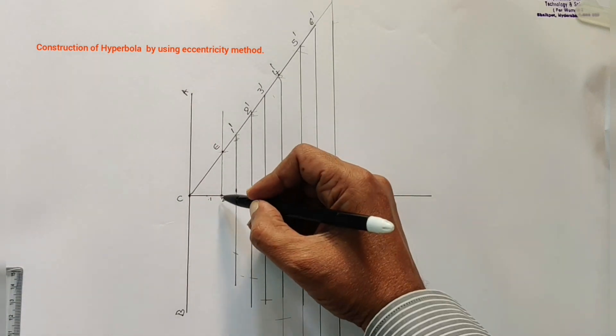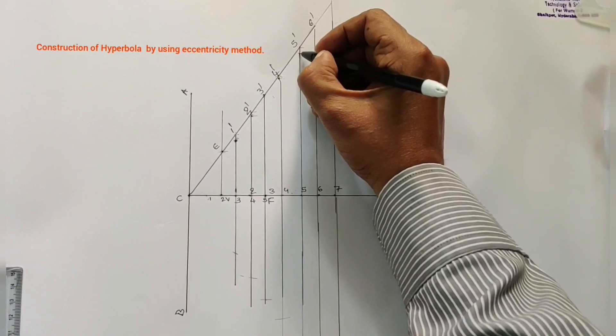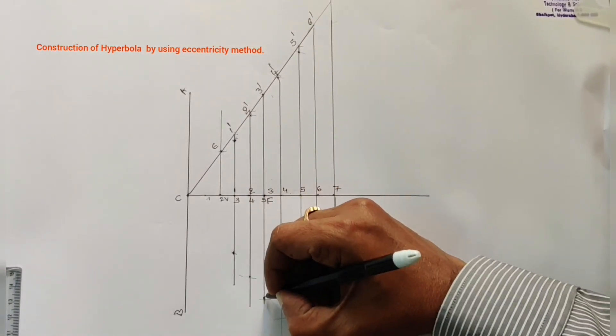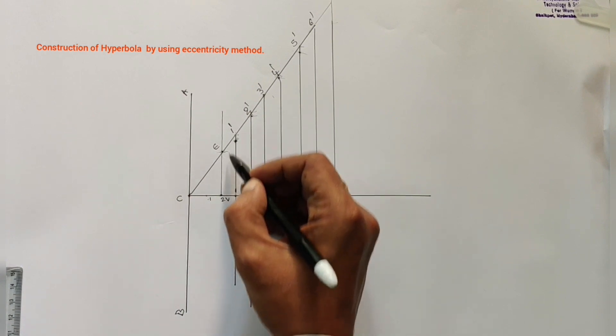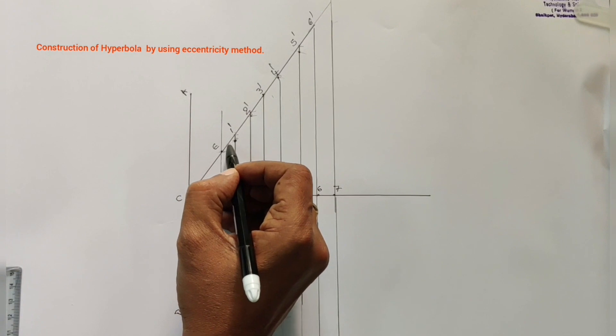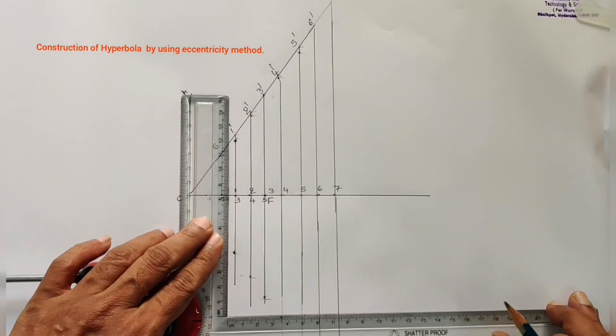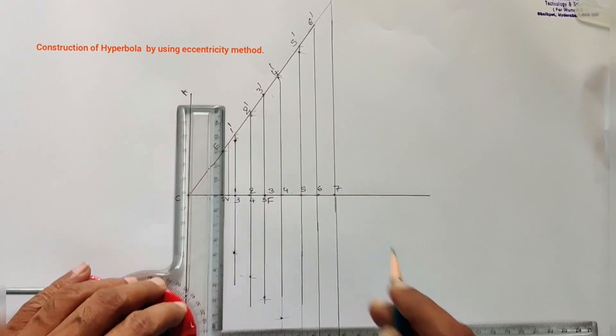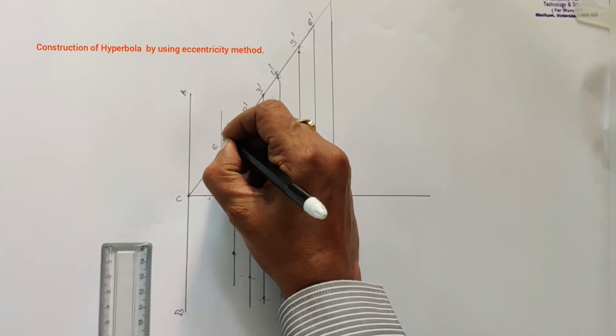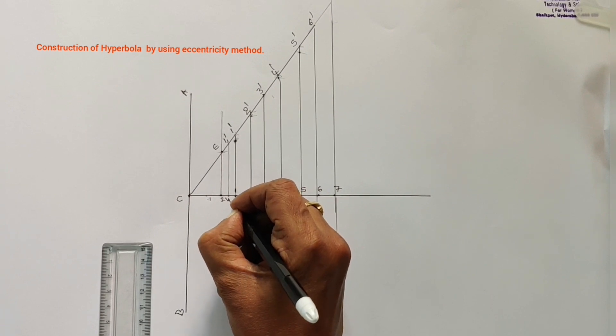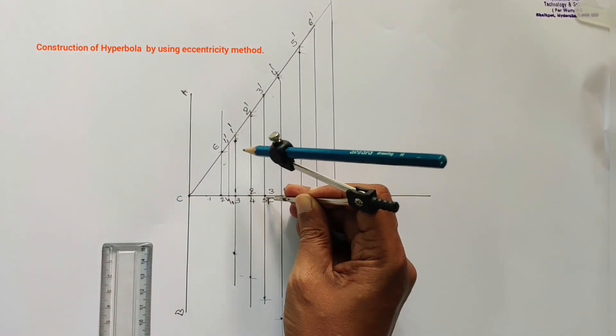After that, starting point as V, passing through these points, draw smooth curve. Next, suppose here we are getting much gap. Then in between two and three, we can draw one more perpendicular line. Say some point one one dash and this is one one. Then one one one, one one dash as a radius, F as a center.